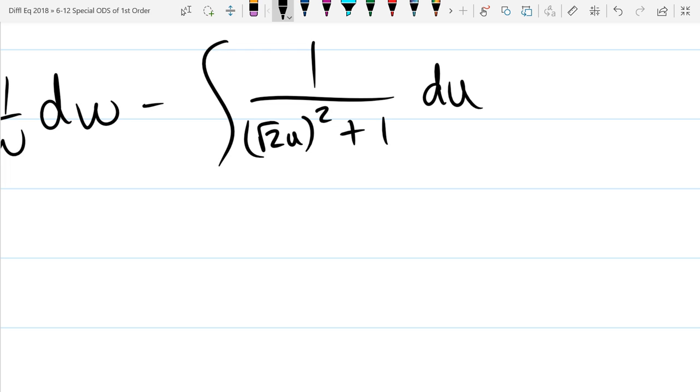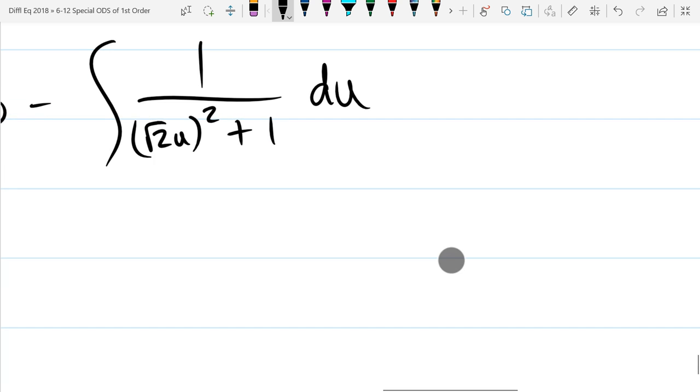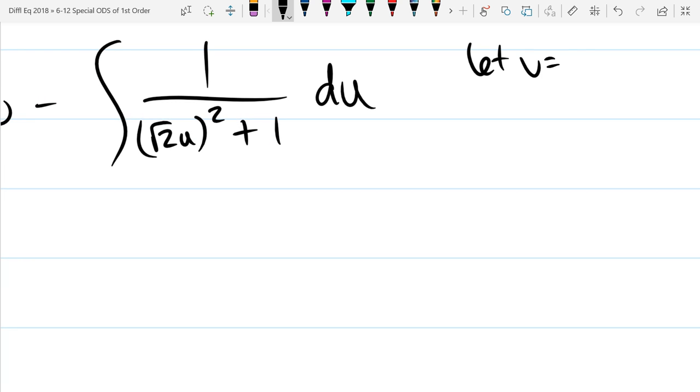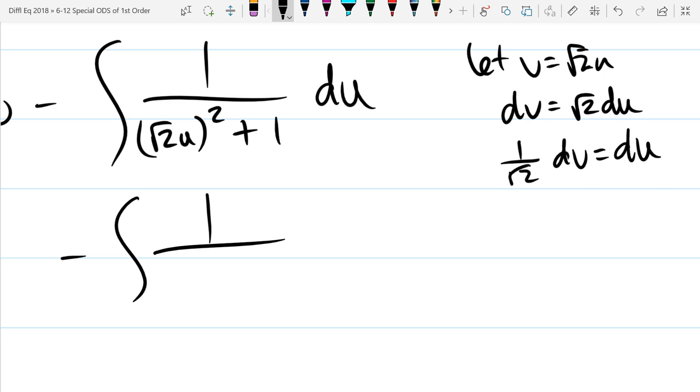We're kind of running out of letters. We'll do a v substitution. Let v equal square root 2u. And dv is square root 2du. I don't have a square root 2, so it's 1 over square root 2 dv equals du. You're doing another u-sub. Yeah, so I use the letter v. Otherwise I would have u equals square root 2u, which the only value that would make that true is 0.